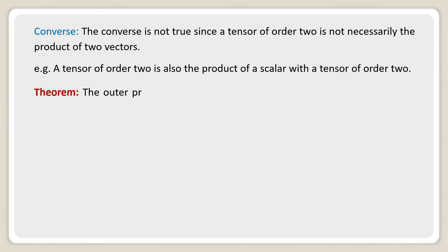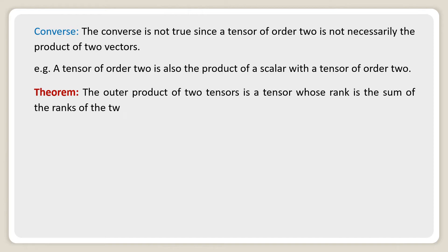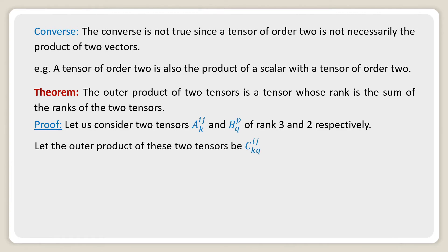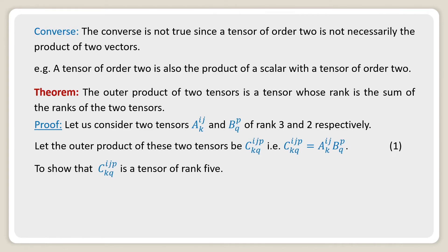Theorem: The outer product of two tensors is a tensor whose rank is the sum of the ranks of the two tensors. Proof: Let us consider two tensors A^ij_k and B^p_q of rank 3 and 2 respectively. Let the outer product be C^ijp_kq, that is, C^ijp_kq = A^ij_k · B^p_q. Say this is equation number 1. We need to show that C^ijp_kq is a tensor of rank 5.